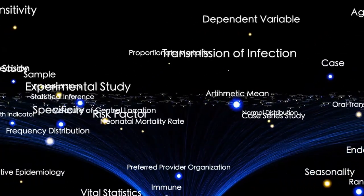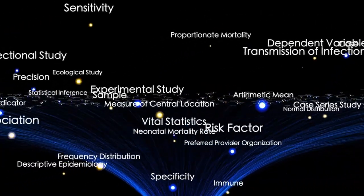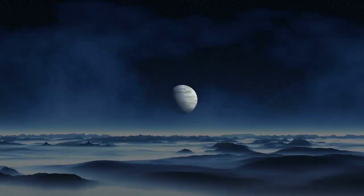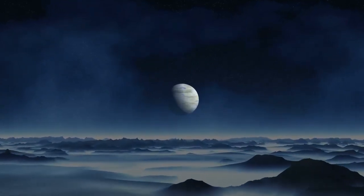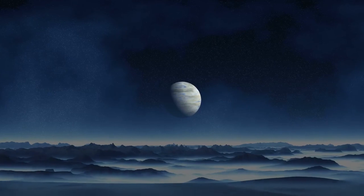Let's take a closer look at how Proxima b compares to Earth. For starters, its mass is estimated to be about 1.27 times that of our home planet, which suggests that it's a rocky planet with a solid surface. While Earth is approximately 93 million miles away from the Sun, Proxima b orbits its star at just 4.6 million miles.